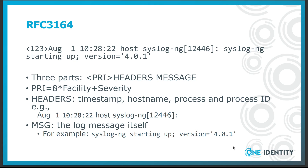A typical RFC 3164 syslog message looks like this. It has three parts. Priority is calculated from facility, which is the category of the sender application, and severity, which declares the importance of the message. This information is used sometimes for filtering log messages but normally does not appear in log messages saved to files. Headers include timestamp, a hostname, and often program name and related process ID. The rest of the line is the actual log message.